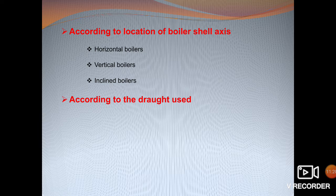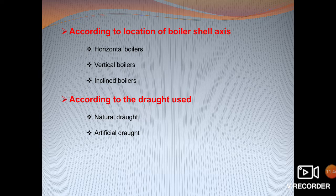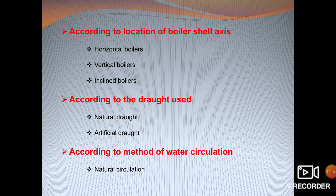According to the draught used, boilers are classified as natural draught boilers, where air circulation for combustion is provided with the help of a chimney, and artificial draught boilers, where either a forced draught fan or an induced draught fan or both are used to provide the airflow. According to the method of water circulation, there is natural circulation — where circulation occurs due to density differences caused by water temperature — and forced circulation, where circulation is done with the help of a pump.